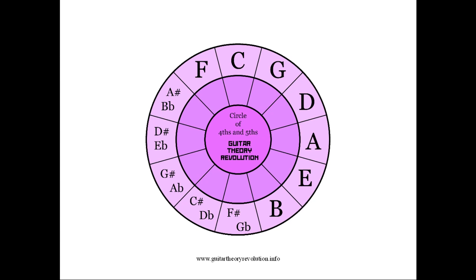So a really easy way to remember it is as follows. We'll start on the bottom right-hand side and we're going to spell out the letters BEAD. This is in the direction of fourths, or five frets on the guitar. BEAD spells out the word BEAD — that's easy enough to remember.